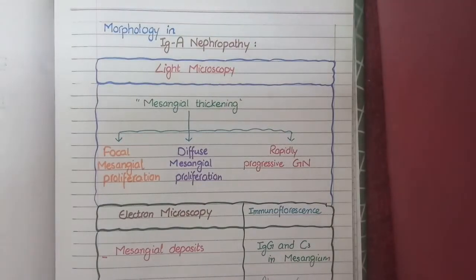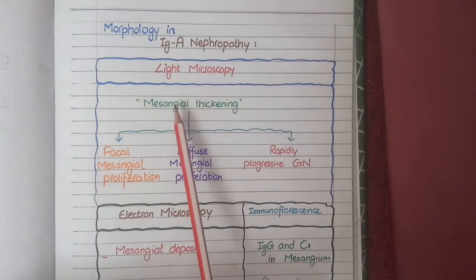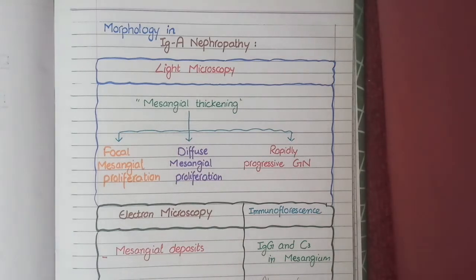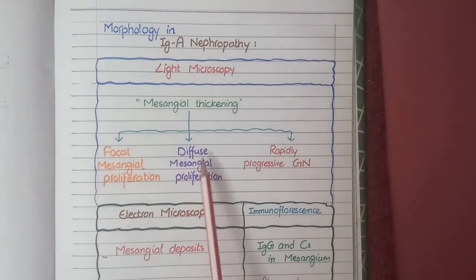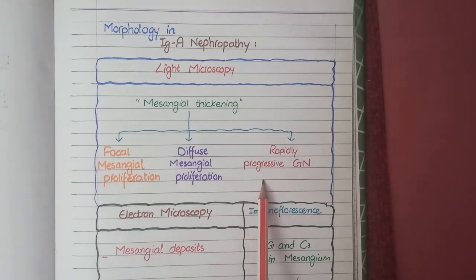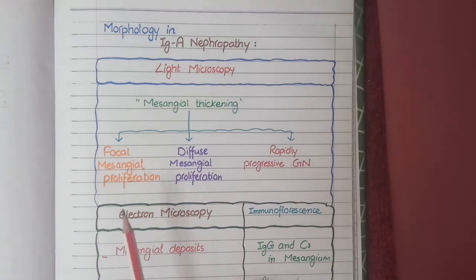Now for the morphology of IgA nephropathy: on light microscopy, the key finding is mesangial thickening — increased amount of mesangium due to both mesangial deposits and reactive proliferation of mesangial matrix. There are three patterns: first, focal mesangial proliferation (proliferation at only some foci); second, diffuse mesangial proliferation (proliferation in all glomeruli at all foci); and third, rapidly progressive glomerulonephritis, the most rare pattern, which will be discussed separately.